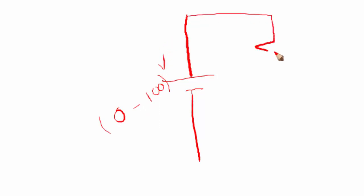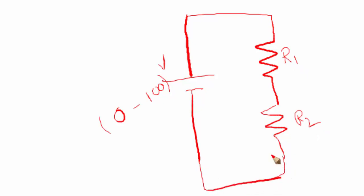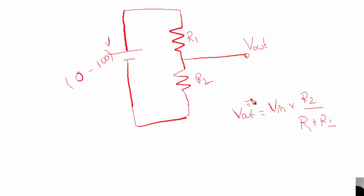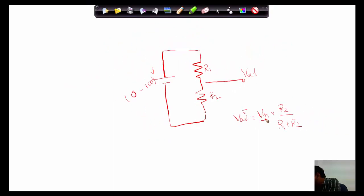The circuit has two resistors R1 and R2. I would like to tap the output voltage V_out. As per the voltage divider rule, V_out equals the total input voltage V_in multiplied by R2 divided by R1 plus R2, because we want to take the voltage drop across that particular resistor divided by the total resistance R1 plus R2.